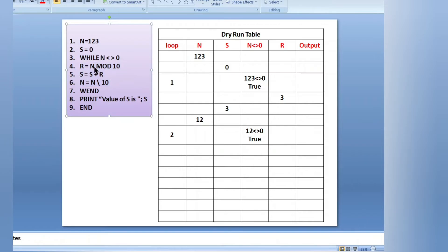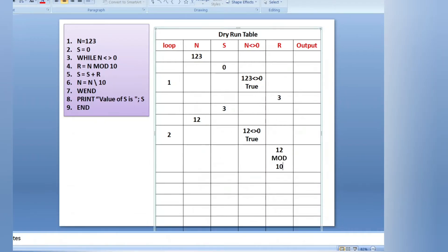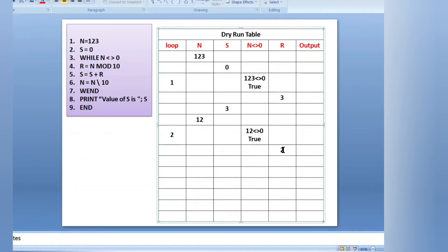Second iteration: r equals to n mod 10. N is 12, so 12 mod 10 — any number mod 10 gives the last digit. Last digit of 12 is 2, so r is 2. Then s equals to s plus r. Current s is 3, r is 2, so 3 plus 2 equals 5 — value of s is now 5.